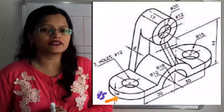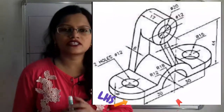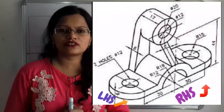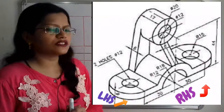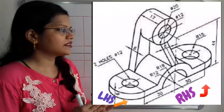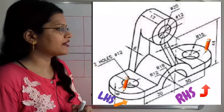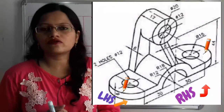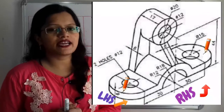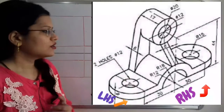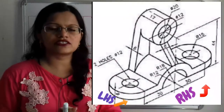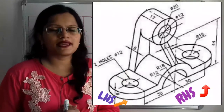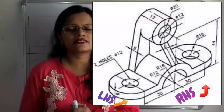Let us first observe the given three dimensional object. There are two sides: the right hand side and left hand side. The total length on the right hand side is 30 plus 30, and on both sides there are curvatures having R15. So we add the radius R15 twice: 30 plus 30 plus 2 into 15 equals 30, giving a total length of 90 millimeters. On the left hand side there is only the semicircular structure having R15, so we take its diameter as 30 millimeters. The maximum length is 90 millimeters on the right hand side.